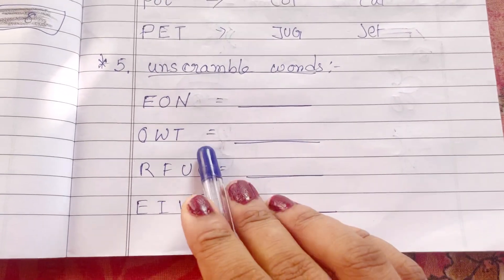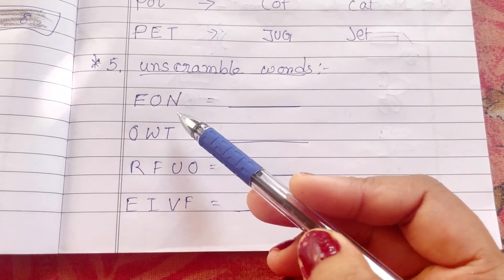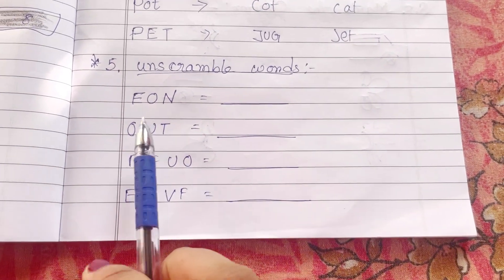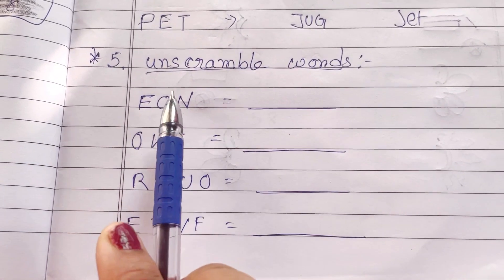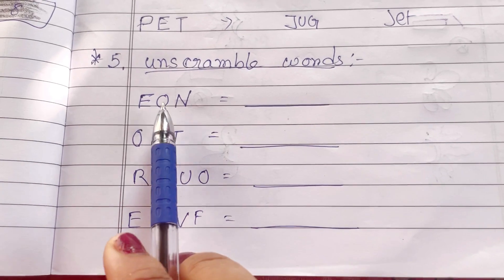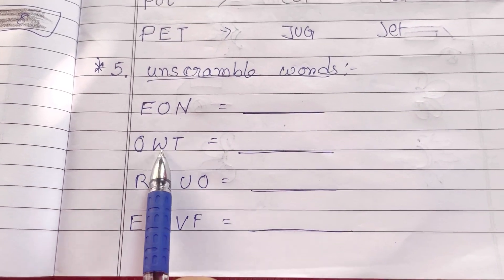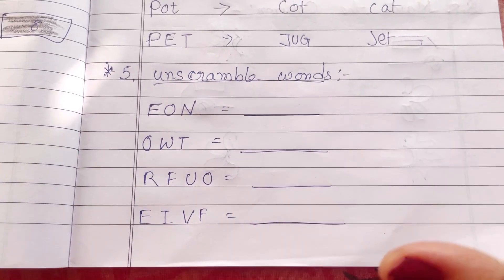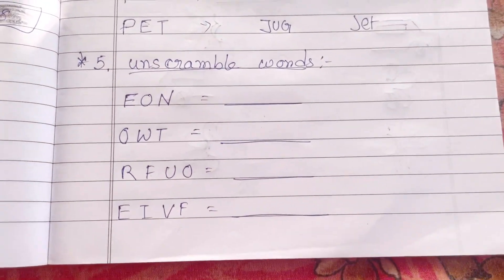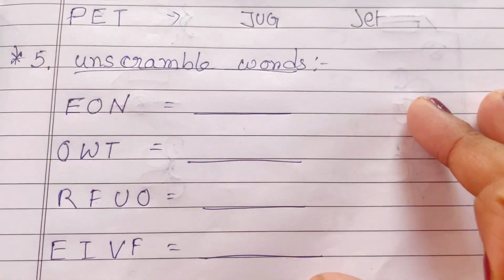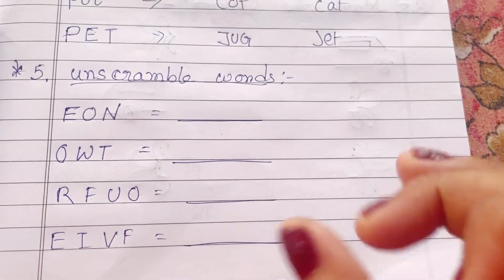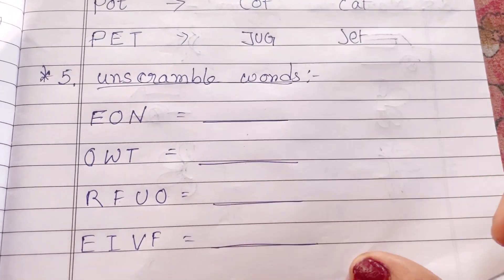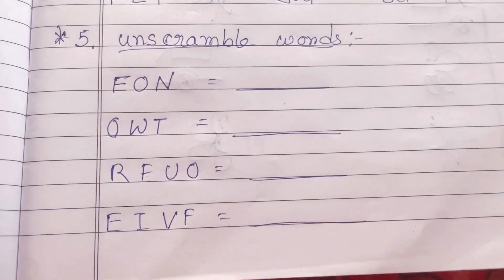Agla worksheet hai 'Unscramble words'. Yahan pe maine number ke names diye hue hain jaise one, two, four, five. Bachche ko kya karna hai, pehle identify karna hai ki yahan kaun sa word hai aur isko unscramble karke yahan likhna hai. Like O-N-E = one, T-W-O = two, F-O-U-R = four, F-I-V-E = five. Is worksheet mein aap bachche ko madad kar sakti ho sabse pahle, kyunki naye hone par thoda problem hoga. Lekin baar baar practice karne ke baad unke liye easy ho jayega aur woh akele bhi kar sakenge.